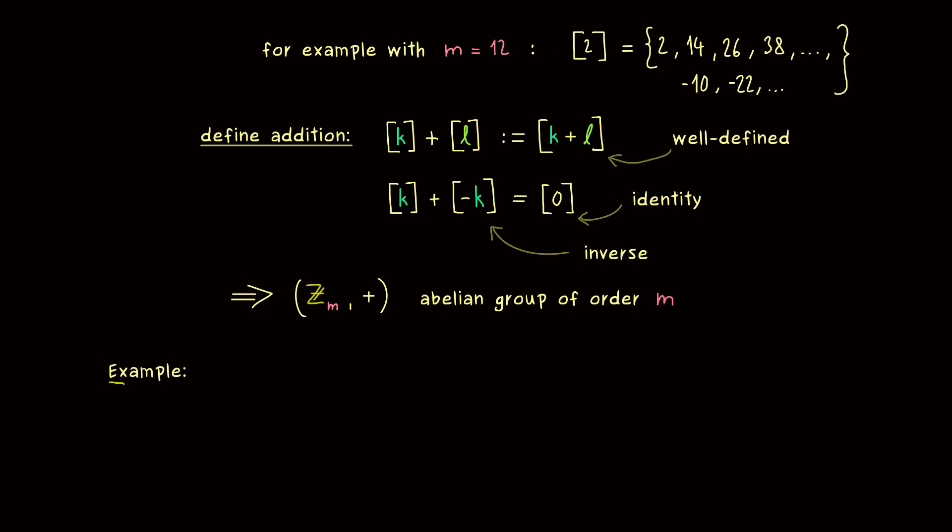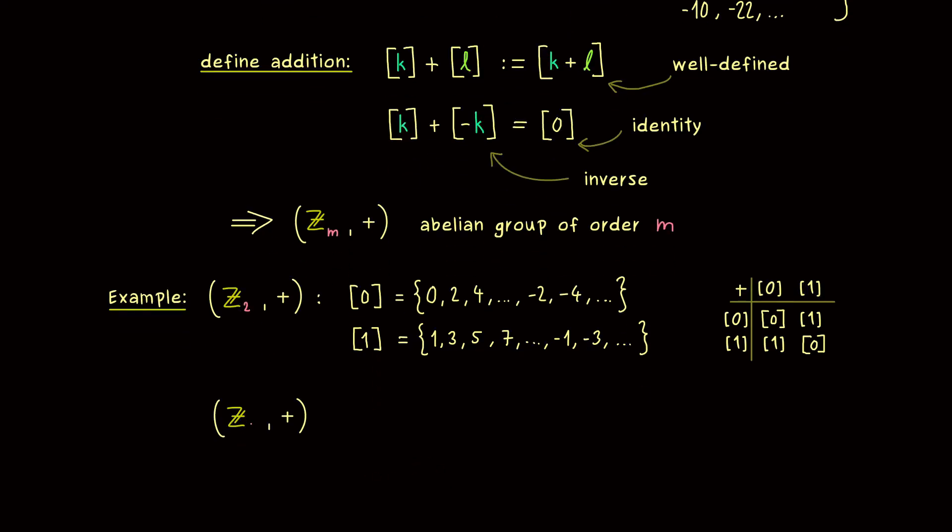Indeed, a really simple one would be given by m equals 2. So there we only have two elements, and we can describe them by two equivalence classes. Indeed, the one for 0 consists of all the even numbers, and the one for 1 consists of all the odd numbers. And obviously the whole operation with the addition is not complicated at all. We can describe it with the table as always. So as you can see, we only have four possible outcomes, and the neutral element 0 already fixes three. And finally, you also see if we add 1 to 1, we get the equivalence class of 2, which is the same as the equivalence class of 0.